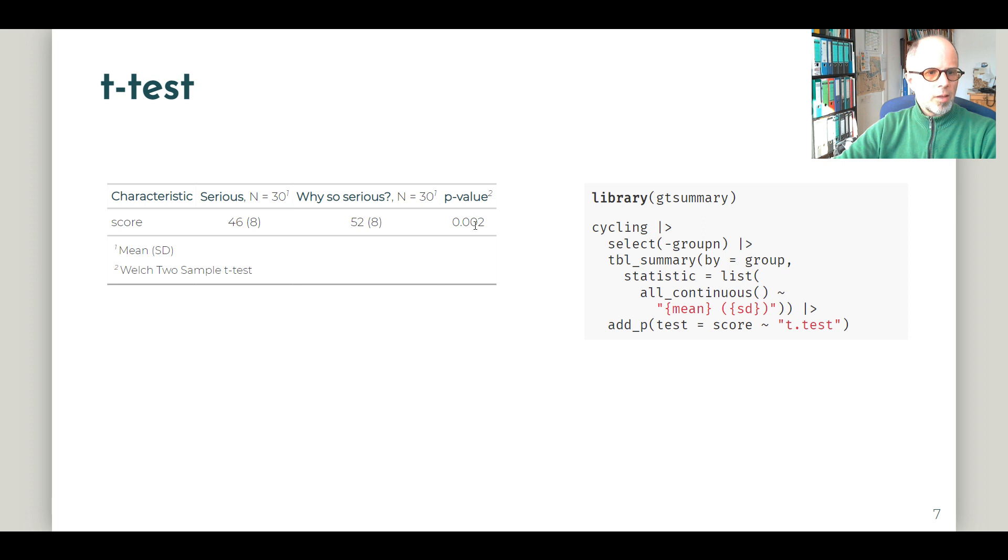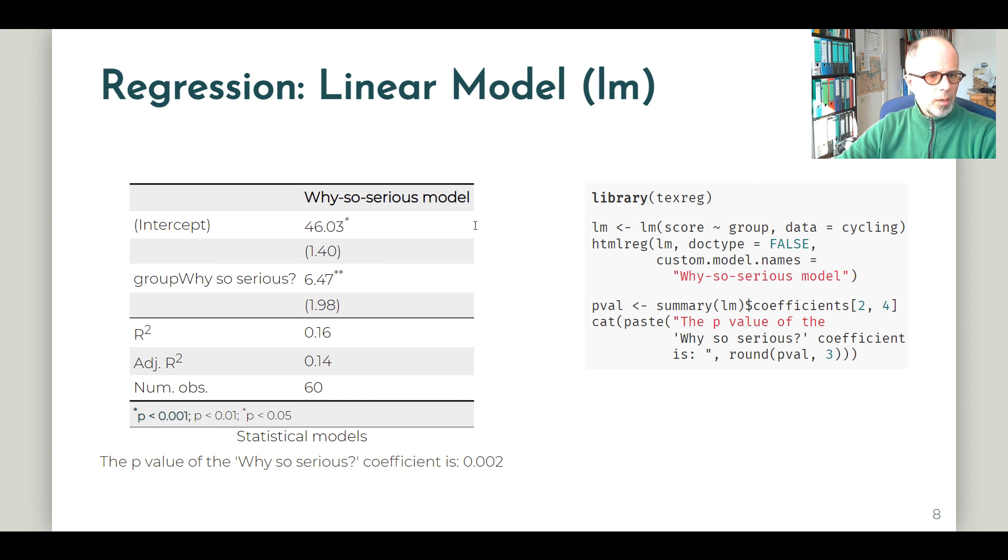And let's see how this t-test compares to a simple linear regression model. So the output looks a little bit different. It looks like a different method. We see that the group difference is significant, indicated by the two asterisks or stars here. The exact p-value is not displayed in this format from this function I'm using. So I displayed it here again at the bottom. And we see it's exactly the same p-value that we also got for the t-test, 0.002. And this is not by chance. The methods are not fundamentally different. They display results a bit differently. But we get to the same conclusion.